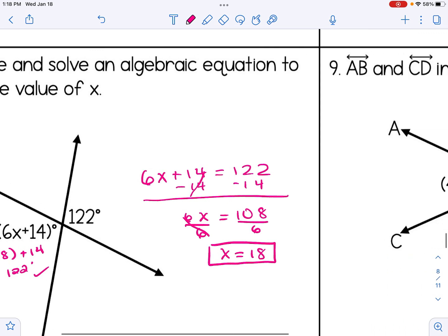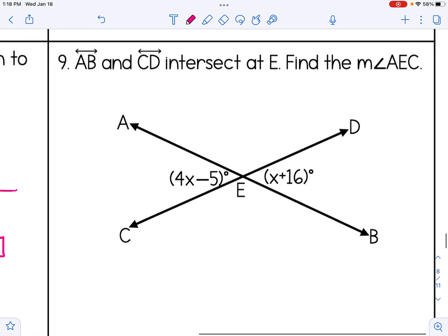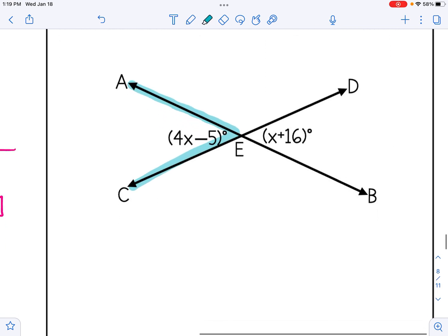And for our last problem, AB and CD intersect at E, and we want to find the measure of angle AEC. That means we want to figure out angle AEC is over here where the 4X minus 5 is. We need to figure out that angle measure. Once again, I'm going to set up an algebraic equation. So 4X minus 5 equals X plus 16, and I'm going to work to get the variables on one side and the numbers on the other.